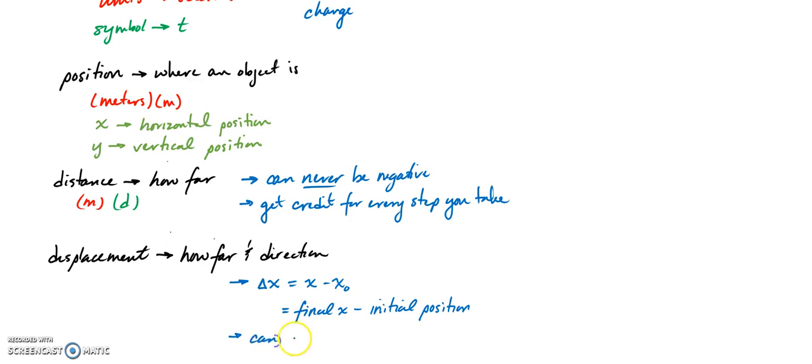When I say final position, I really mean your current position - whatever time you're looking at. So don't get too hung up on the word final. The thing about this is it can be positive, negative, or zero. For example, if I go out for a run starting at my house and run all the way around and come back to my house...